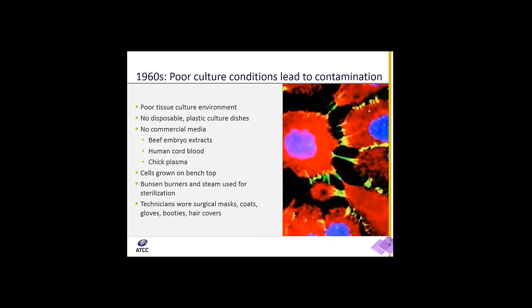HeLa was the first cell line to be isolated, but by the 1960s, multiple other human cell lines were also deposited. What was found was that quite a few of these human cell lines derived in the 1960s were contaminated with HeLa. It was thought that these contaminations were due to poor tissue culture environment. In those days, it was not unusual for cell lines to be grown on the bench. There was no sterile plastic ware, no commercial basal media. Technicians relied on a homebrew of beef embryo extracts, human cord blood, and chick plasma. Attempts were made at creating an antiseptic environment using Bunsen burners and steam, and technicians wore surgical masks, coats, gloves, booties, and hair covers. But these efforts were insufficient.